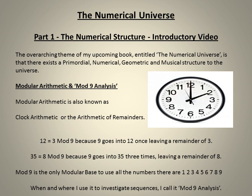If we take a number like 35, it is 8 mod 9 because 9 goes into 35 three times, leaving a remainder of 8. All my work focuses solely on mod 9 — the only one that uses all the numbers that there are — and when and where I use it, I call it mod 9 analysis.